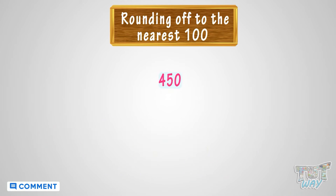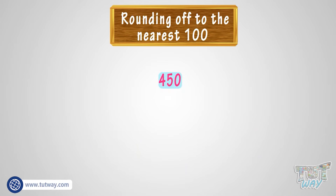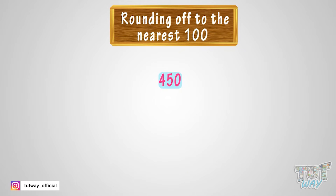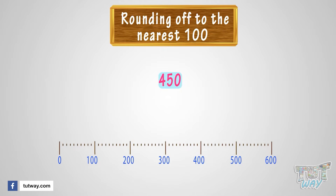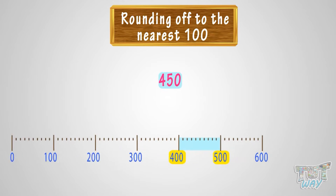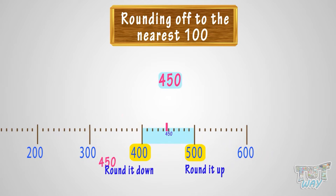Now let's take another example, 450. We have to round 450 to the nearest 100. Let's see where we can fit 450 on this number line. It is somewhere between 400 and 500. The number is on the 50 mark, which is also rounded up, so we will round it up to 500.